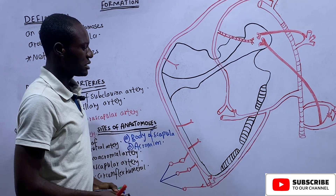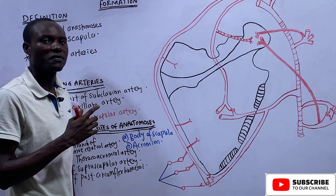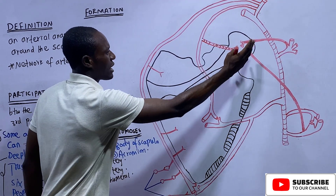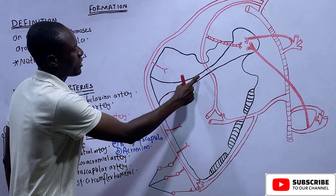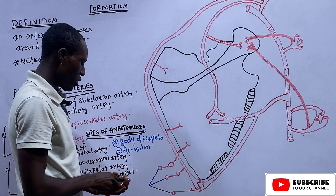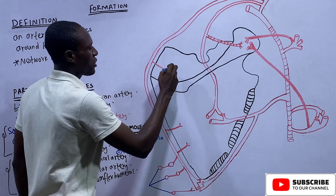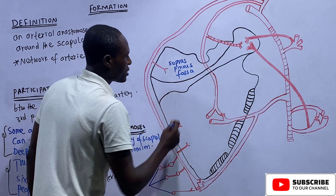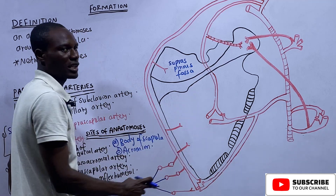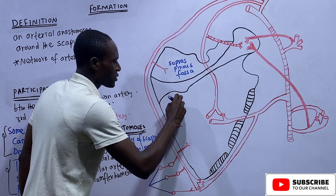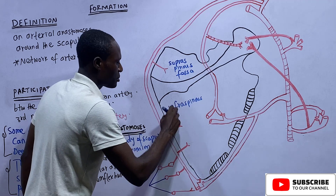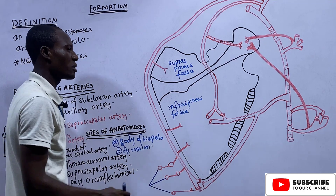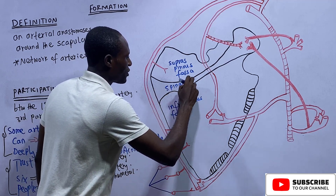To locate those sites we need to look at a diagram showing the dorsal surface of the scapula. The most prominent feature is the spine of the scapula — it has a root, a crest, and fans out as the acromial process. This spine divides the scapula into two unequal fossae: the supraspinous fossa above the spine, and the larger infraspinous fossa below the spine.